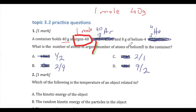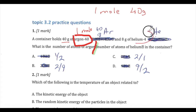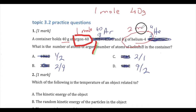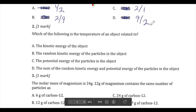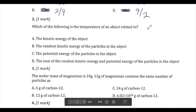We have eight grams of helium-4, and helium-4 means one mole is four grams. So eight grams means we have two moles of helium. The ratio of argon to helium atoms is therefore one over two.